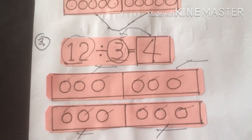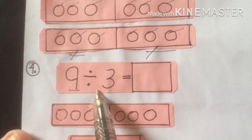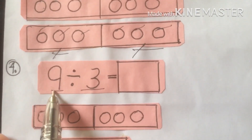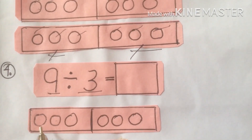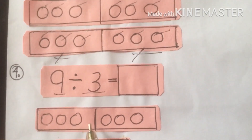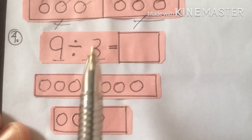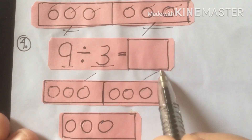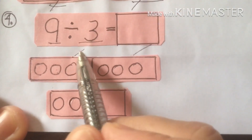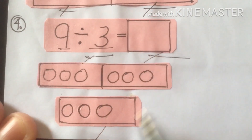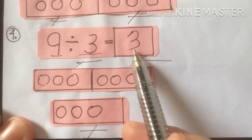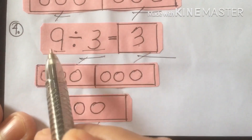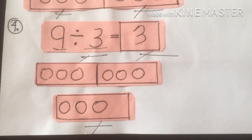9 divided by 3. What is 9? 9 is our dividend. We draw 9 beads: 1, 2, 3, 4, 5, 6, 7, 8, 9. We group them by 3: 1–2–3, 1–2–3, 1–2–3. Count: 1, 2, 3. There are 3 groups in 9, so the quotient is 3. 3 times 3 equals 9. That is the division process.